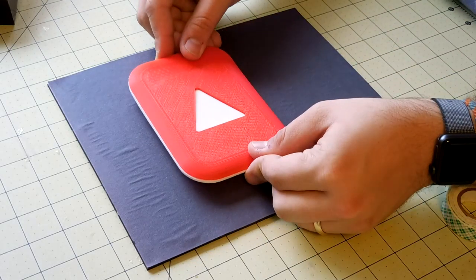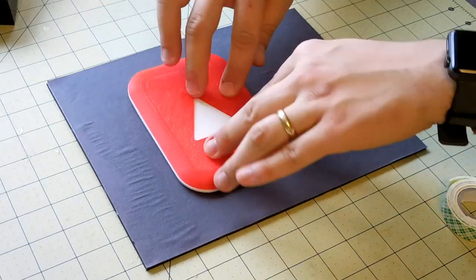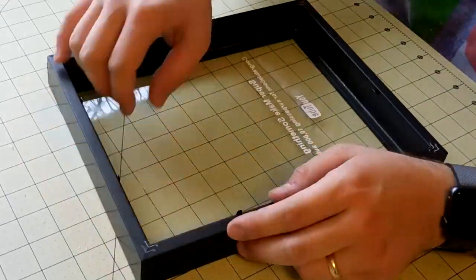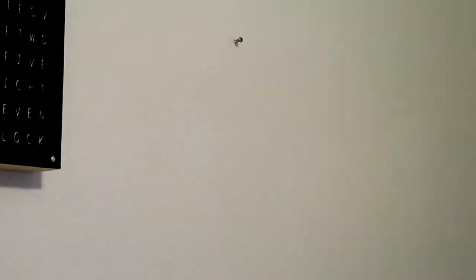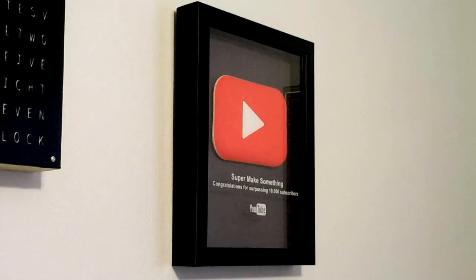The play button was attached to the backboard using foam tape. I applied two strips to the back of the play button and then stuck it to the middle of the construction paper. The final step was to reassemble everything. At this point, I had my own, unofficial YouTube Plastic play button to celebrate Super Make Something's 10,000 subscriber milestone.